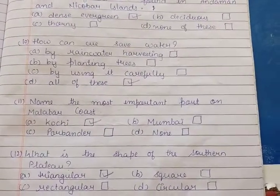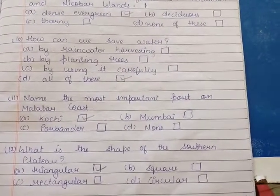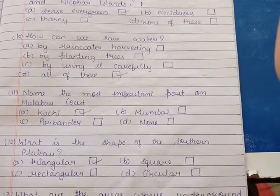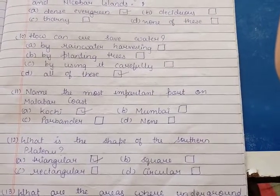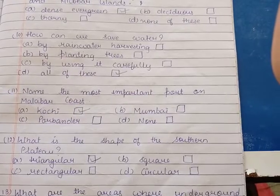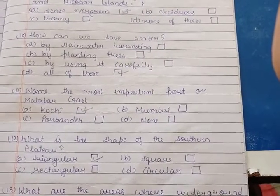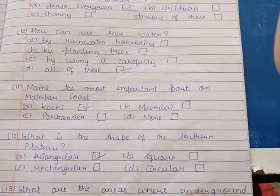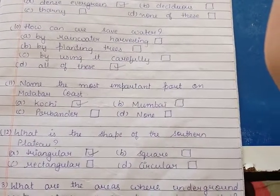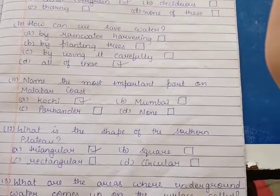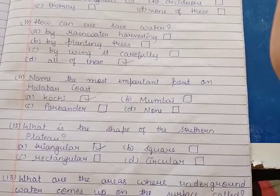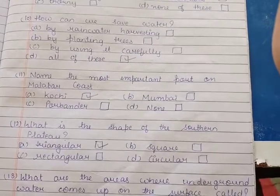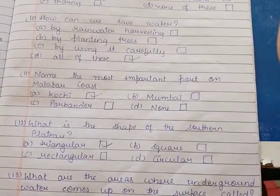Eleventh: Name the most important port on the Malabar coast. A Kochi, B Mumbai, C Porbandar, D None of these. On the Malabar coast, Kochi is the most important port. Twelfth: What is the shape of the Southern Plateau? The Southern Plateau is also called Peninsular. Options include square, rectangular, and circular, but the answer is option A, triangular. The shape of the Southern Plateau is triangular.